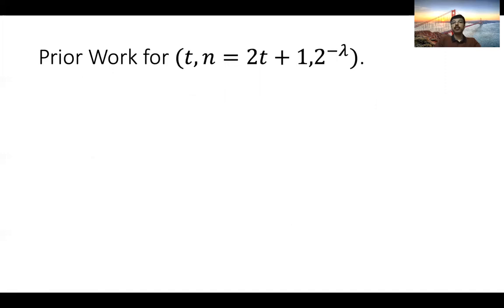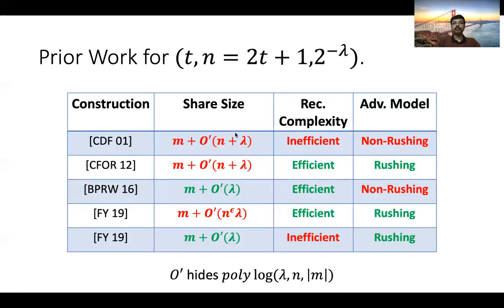Let me give details of prior work for N = 2T + 1, summarized in the following table. The work of Krämer et al. in 2001 improved upon the Rabin–Ben-Or construction, giving a scheme with share size M + O'(N + lambda), where O' hides polylogarithmic factors. However, reconstruction complexity was exponential in the number of parties and it was only proven secure against non-rushing adversaries. A work by Cevallos et al. in 2012 gave a similar share size but with an efficient reconstruction procedure, proven secure against rushing adversaries.